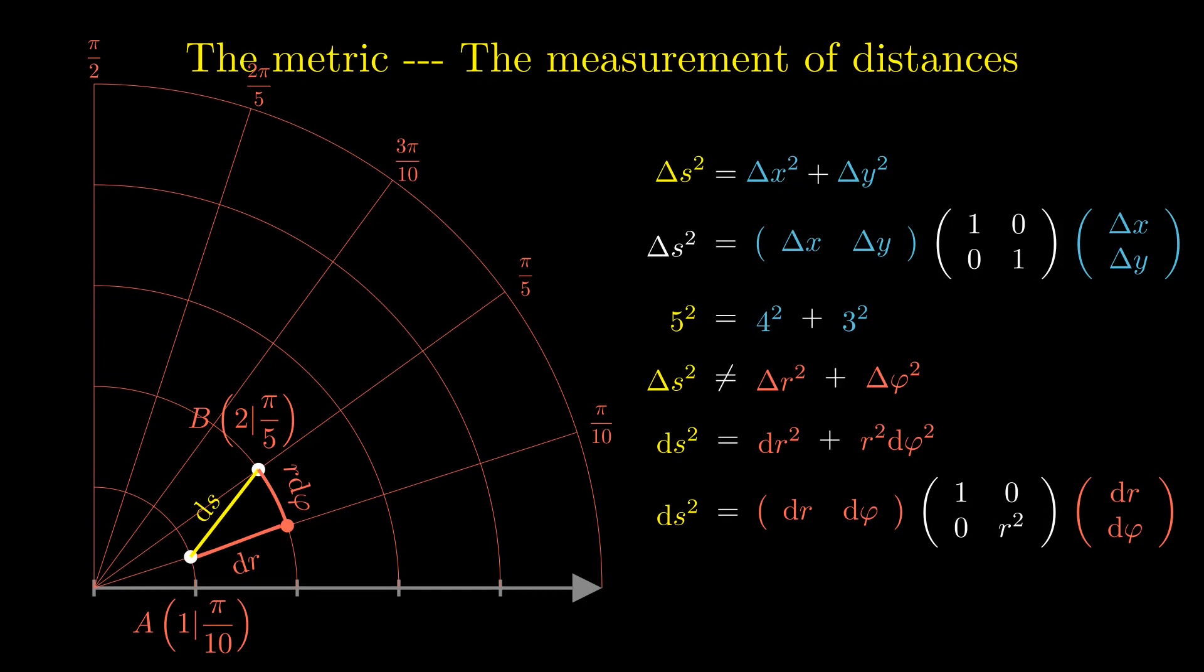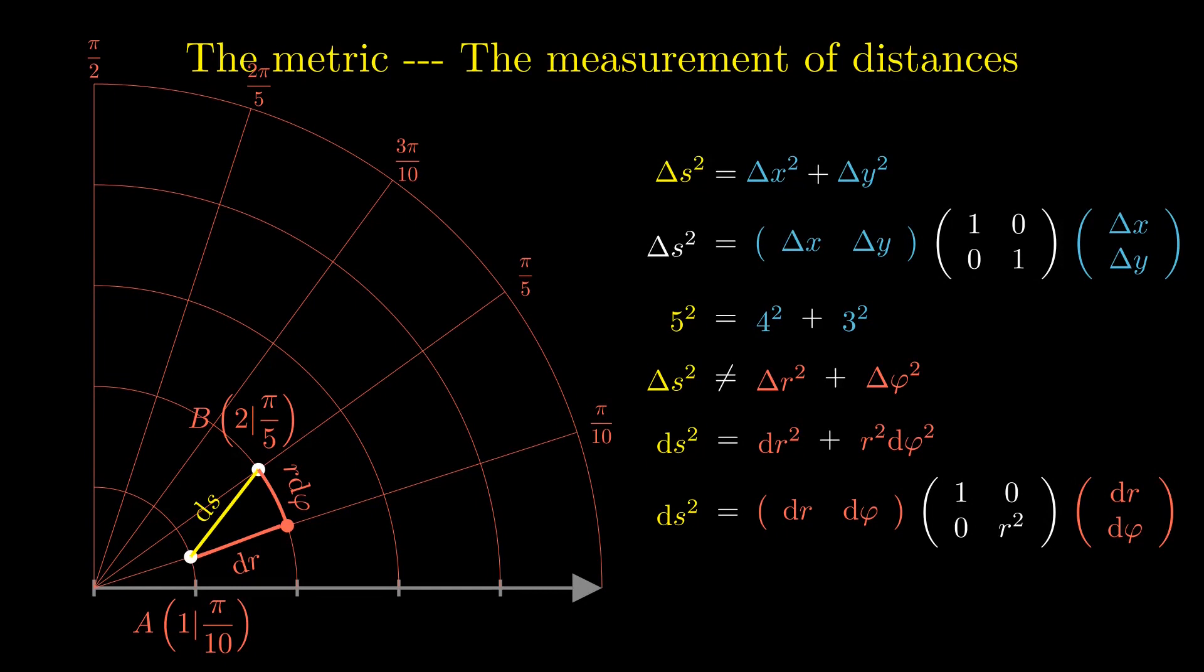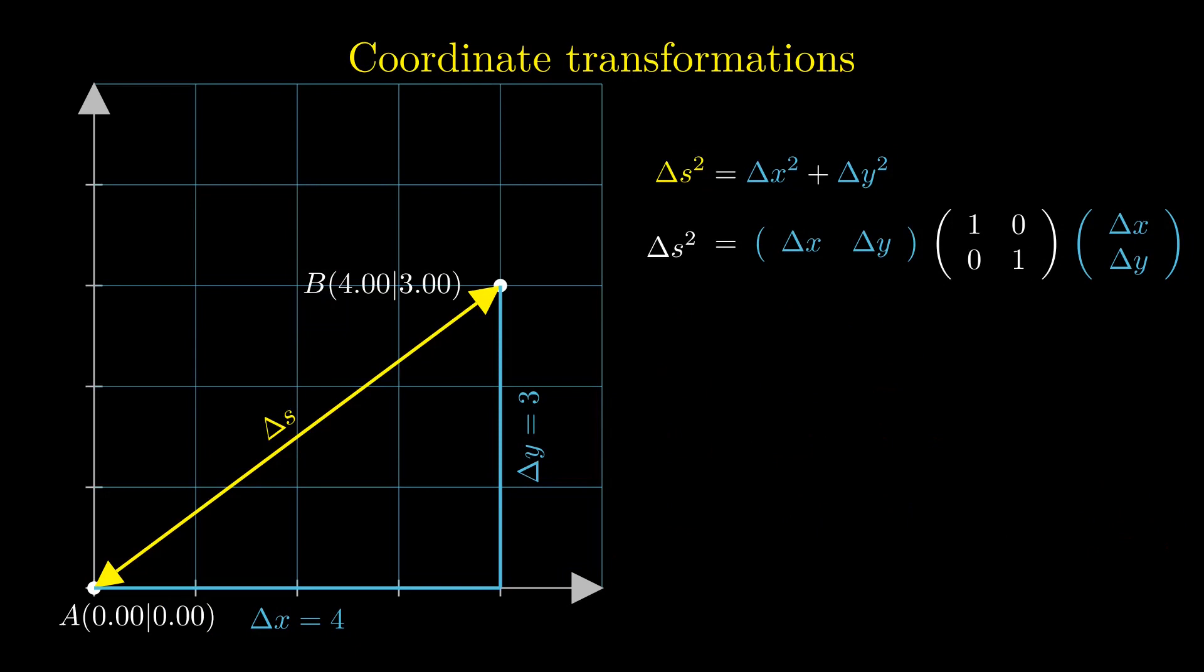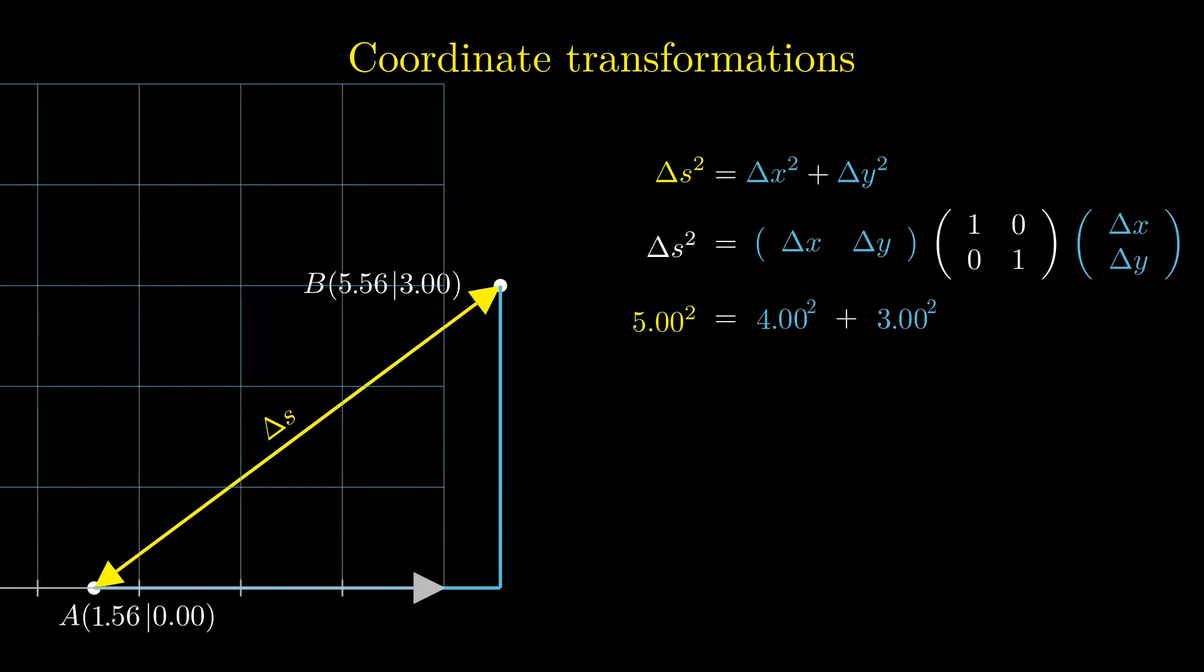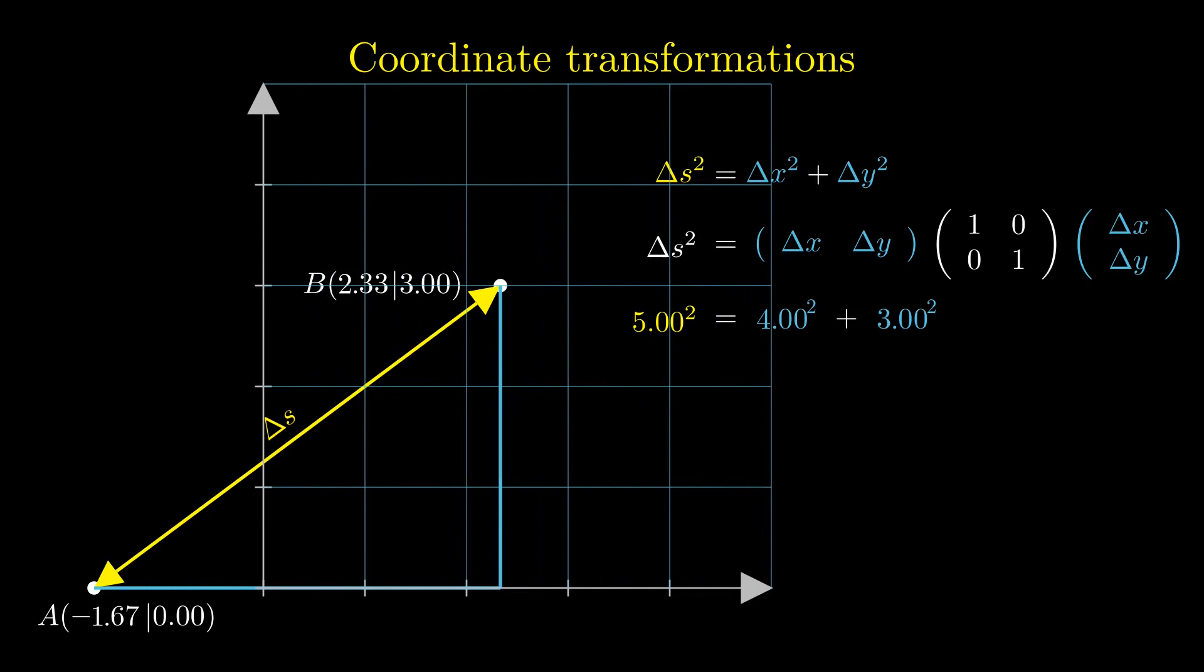Observers at different places use their own coordinate systems that can be shifted with respect to our coordinate system. They will measure different coordinates for the points A and B. Nevertheless, all observers will agree on the distance between the two points A and B independent of their position and choices of coordinates.